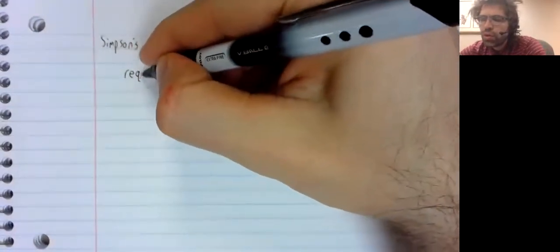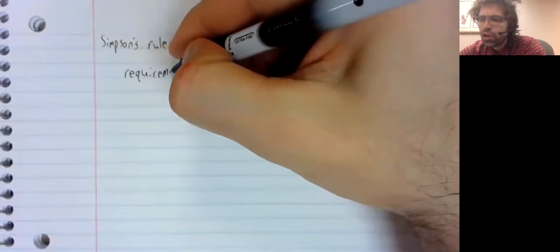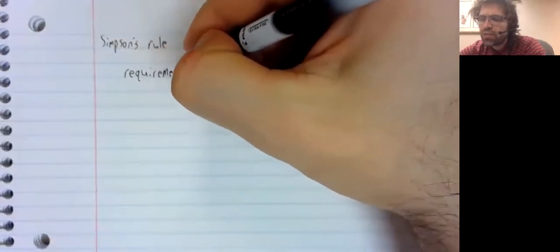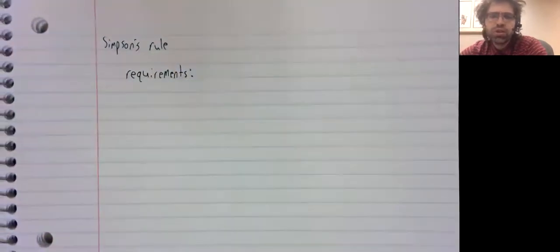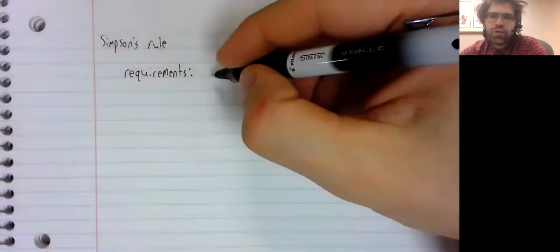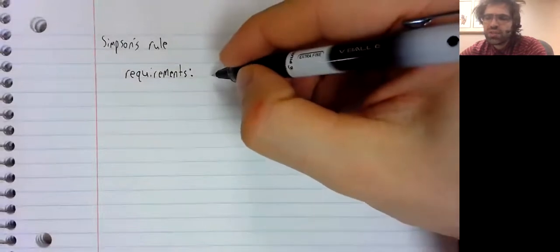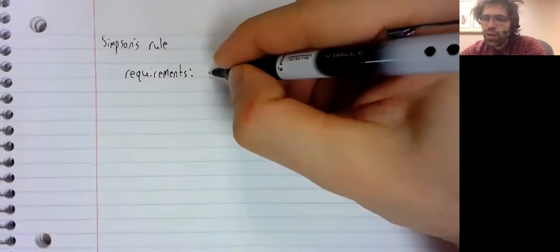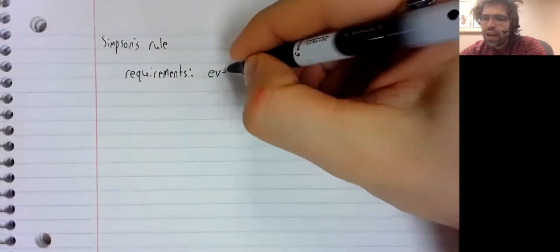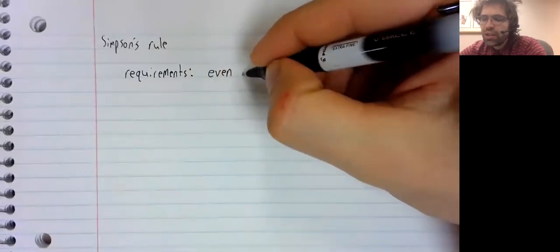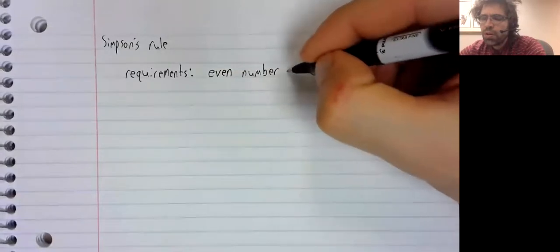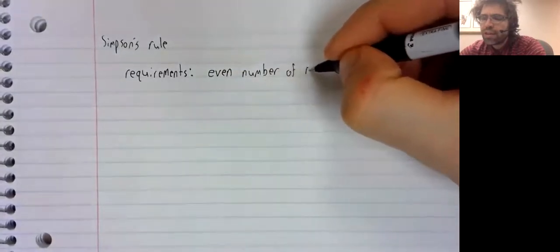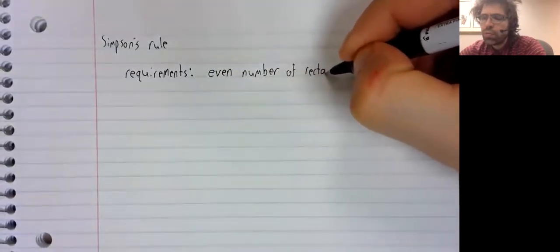Simpson's Rule, first of all, has requirements that the other rules don't. First of all, to use Simpson's Rule, we need to have an even number of rectangles.